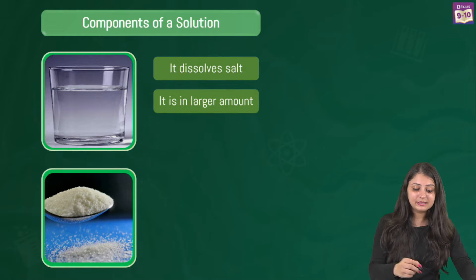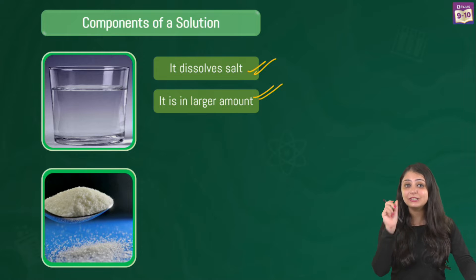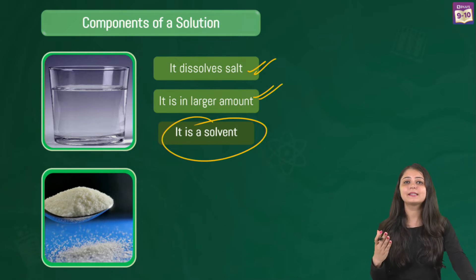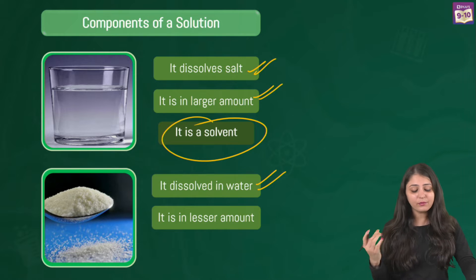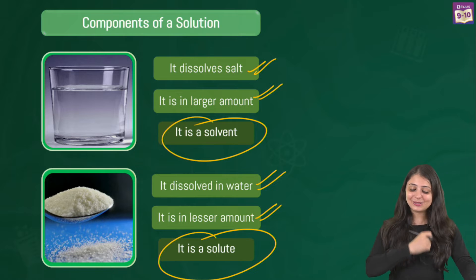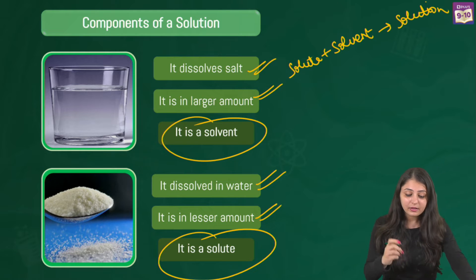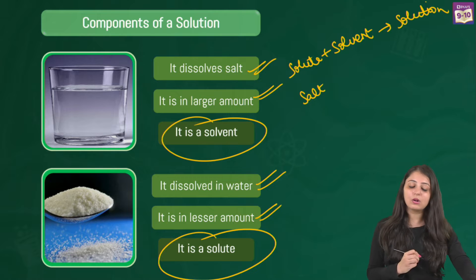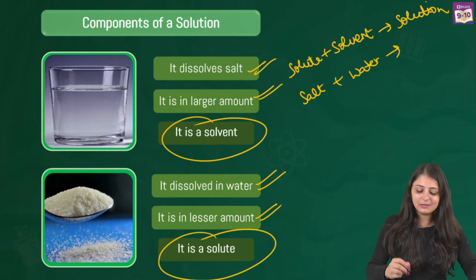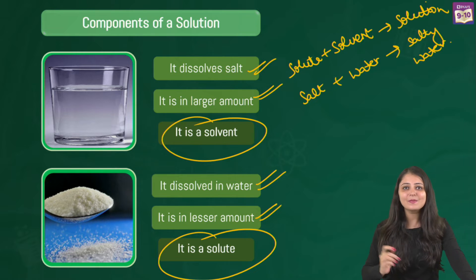Water dissolves the salt and is present in the larger amount — this is called the solvent. The solvent basically dissolves other components. The second component, salt, is present in the lesser amount and gets dissolved in water — this is called the solute. So: solute plus solvent together make a solution. Here, the solute is salt, the solvent is water, and the solution is salty water.